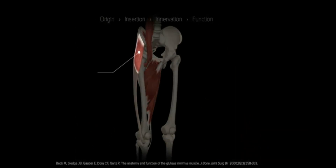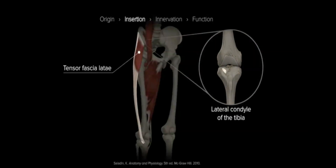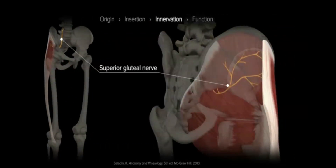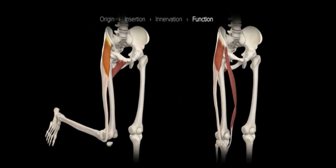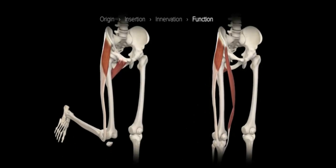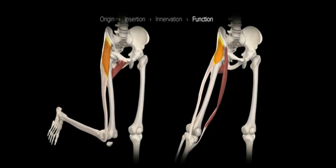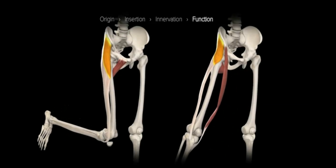Superficially along the lateral aspect of the thigh is the tensor fasciae latae. It originates along the lateral aspect of the anterior superior iliac spine and courses distally along the lateral femur, inserting distally along the iliotibial tract with a terminal insertion into the lateral condyle of the tibia. The tensor fasciae latae is innervated by the superior gluteal nerve. This muscle functions to produce internal rotation, flexion, and weak abduction through the hip joint, and aids in stabilization of the pelvis when weight-bearing. Given its far distal insertion, it also functions to externally rotate and weakly flex the knee, and provides stabilization of both the hip and knee joints.